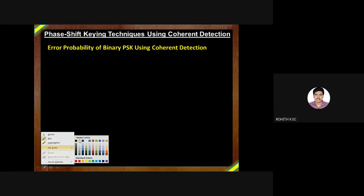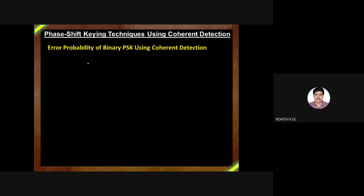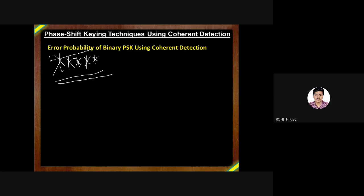In the next class we shall discuss the probability of error for binary phase shift keying using coherent detection. This is a very important derivation — you will definitely have one derivation on probability of error for a modulation technique in the exam. Probability of error is a key metric for understanding receiver performance. Depending on the probability of error value, the designer will select a particular modulation scheme.